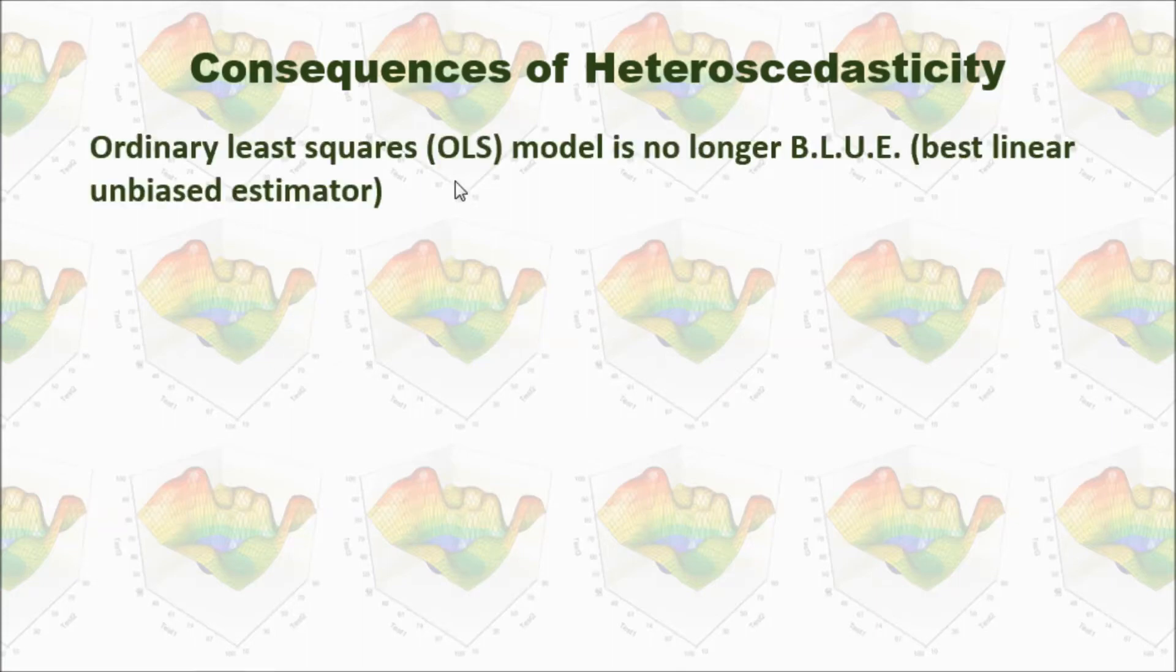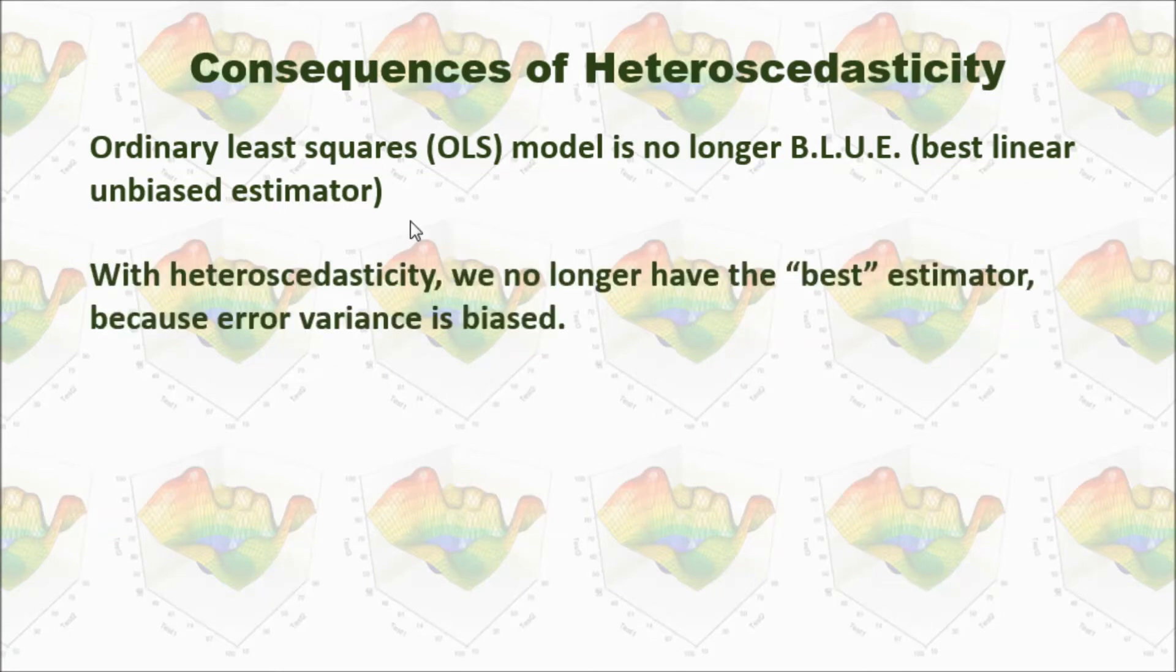The OLS model is no longer best linear unbiased estimator. And with heteroscedasticity, we no longer have the best estimator because error variance is biased.